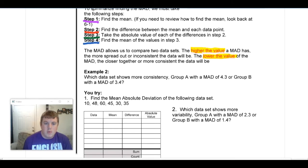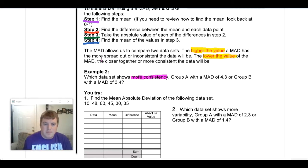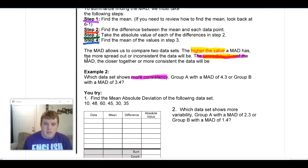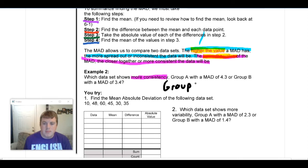So if we look at example two, we want to know which data set shows more consistency: Group A with a MAD of 4.3 or Group B with a MAD of 3.4. So it's always important to pay attention to what you're being asked. We're asked to show the one that has the more consistency. So if we look back to the notes that we just looked at, the lower the value of the MAD, the closer together or more consistent the data will be, as opposed to where the data is higher. When the MAD value is higher, the MAD is going to be more spread out or inconsistent. So we were asked for which one's most consistent. So we need the one that is going to have the lowest value, which is going to be Group B. So since Group B has a MAD of 3.4, which is definitely less than 4.3, Group B is going to be our most consistent set.